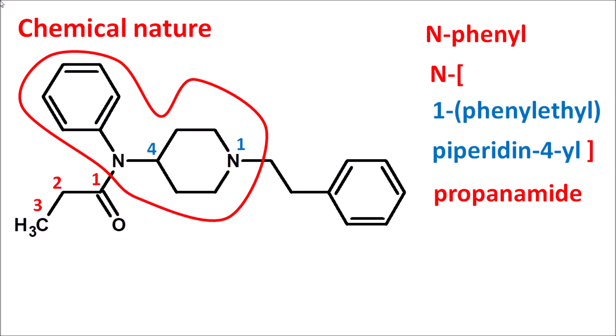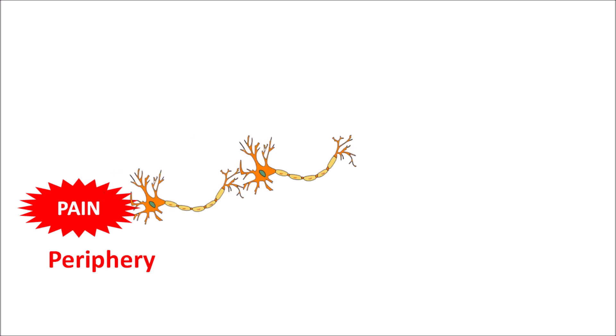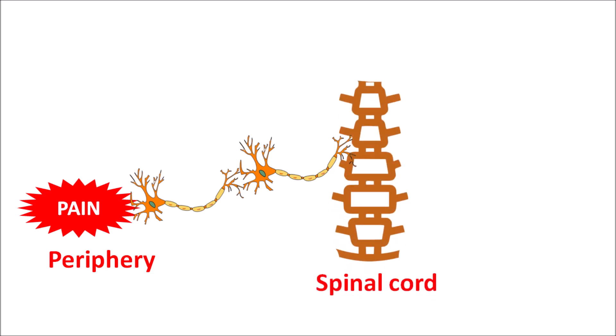When pain is generated at the periphery, it generates nociceptive stimuli carried by sensory neurons. These nociceptive neurons send signals to the spinal cord, which acts as a gating mechanism to control pain sensation. From the spinal cord, signals are sent to the brain where higher centers perceive the pain sensation, or mediators are released to control pain at the spinal cord level.